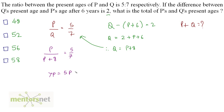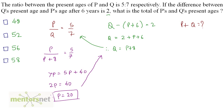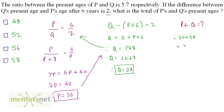Therefore 7P is equal to 5 times P plus 8, giving 5P plus 40. So 7P minus 5P, which is 2P, is equal to 40. Therefore P is equal to 20. Putting P equals 20 into the equation, Q is equal to 20 plus 8, therefore Q's present age is 28 years. So P plus Q gives us 20 plus 28, which is equal to 48. The answer is option A.